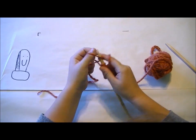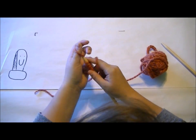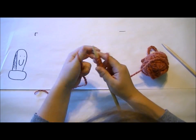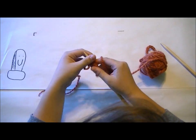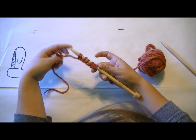And once you get it going, you can start going really fast. I'm not going really fast because this is a big needle. And there you go. And that is how to do the long tail cast on. Let's get it done.